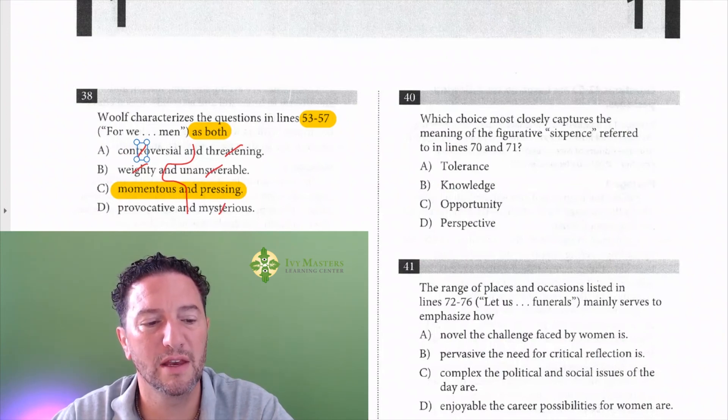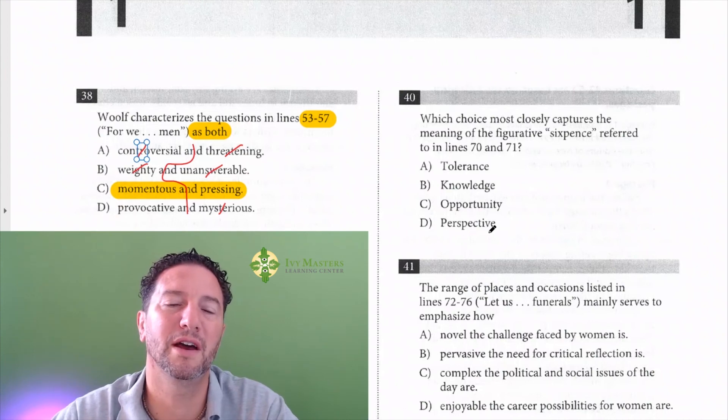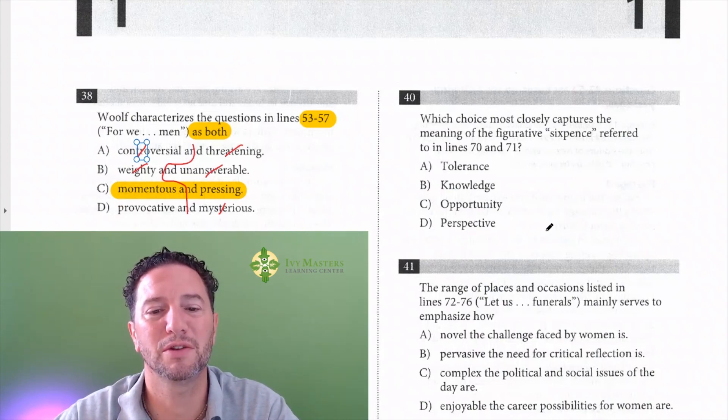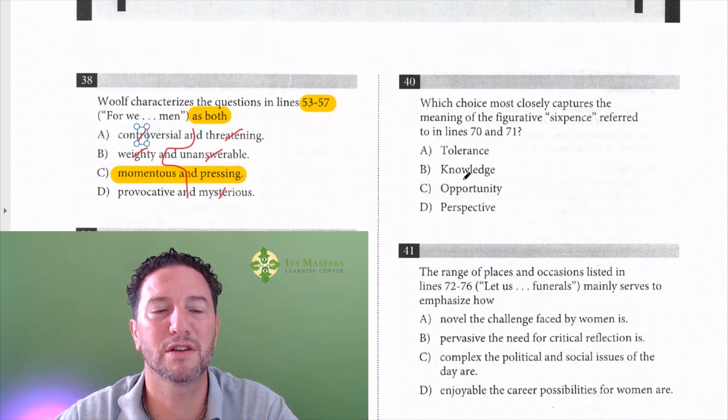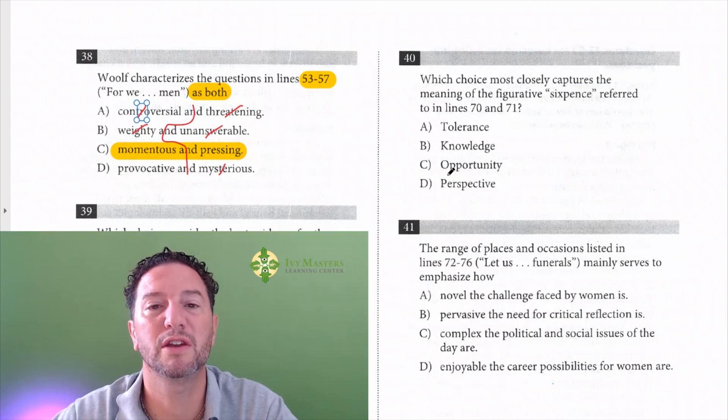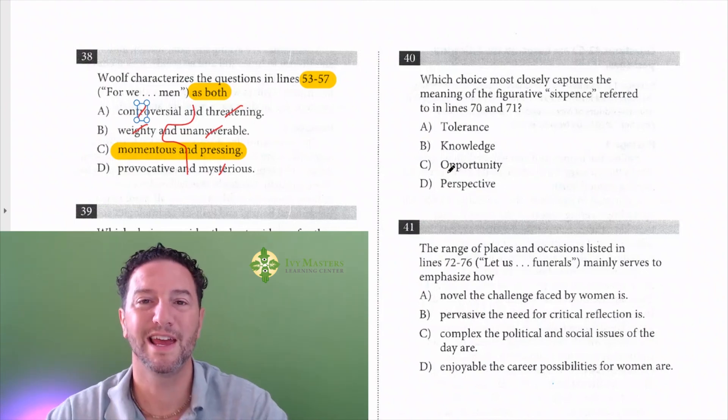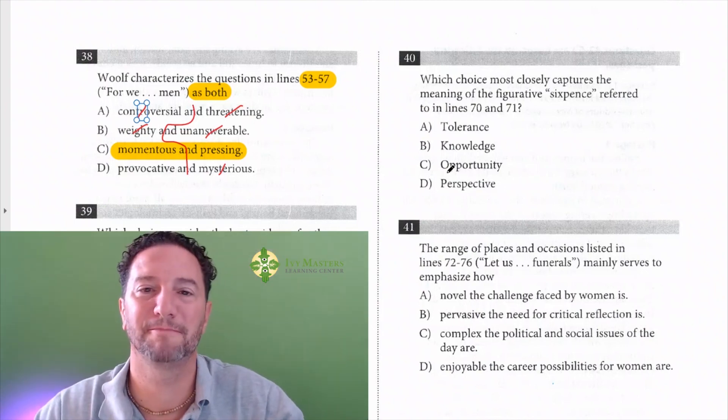So anyway, your correct answer is C for 38 and it's B for 39. Thank you for joining us today. If you like this video, click like. You can share it with someone who has trouble with line reference paired best evidence questions. If there are any questions you'd like to see answered from any official PSAT or SAT or ACT, leave that in the comments. I'd be happy to shoot a video on it and click subscribe so you don't miss anything. Have a great day.